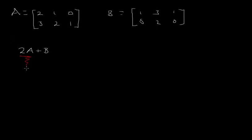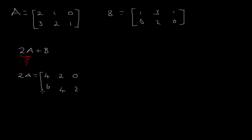To solve 2A plus B, we start by dealing with 2A first. When multiplying a matrix by a constant, we multiply that constant by every element in the matrix. So 2 times 2 gives 4, 2 times 1 gives 2, 2 times 0 gives 0, 2 times 3 gives 6, 2 times 2 gives 4, and 2 times 1 gives 2. So 2A equals the matrix [4, 2, 0, 6, 4, 2].